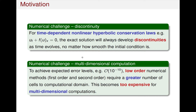Another challenge is about multidimensional computation. To achieve an expected error level, for example of order 10 to the minus 10, low-order numerical methods require a greater number of cells in the computational domain. This becomes too expensive for multidimensional computations. Therefore, the design of high-order numerical methods is very helpful.